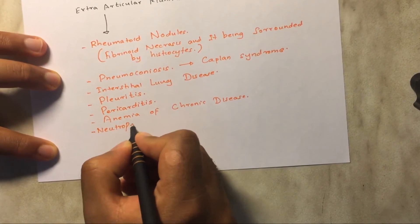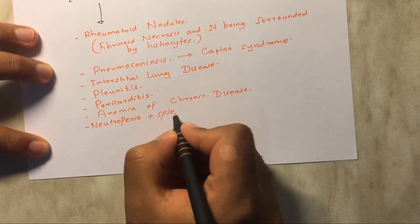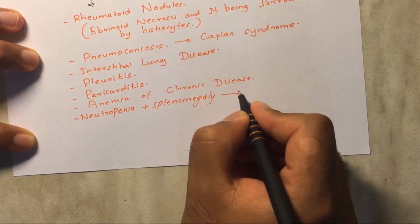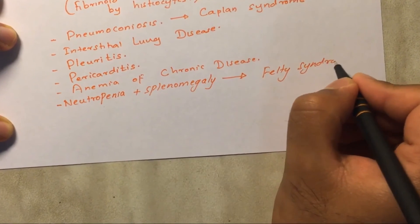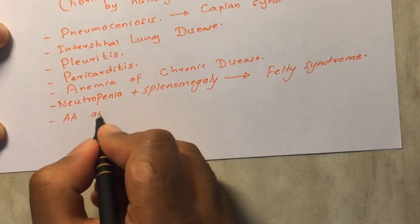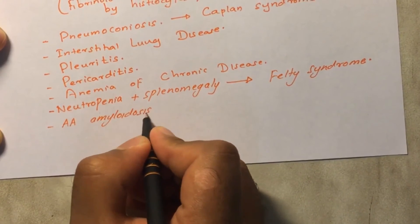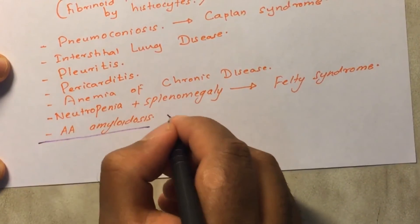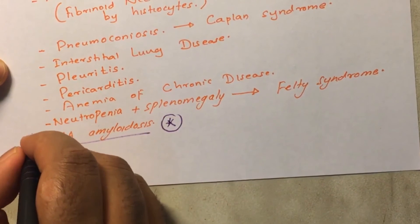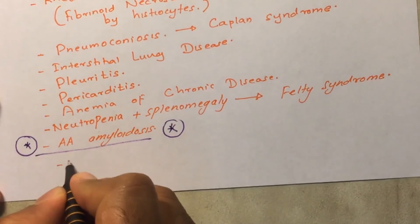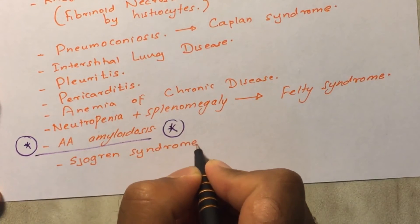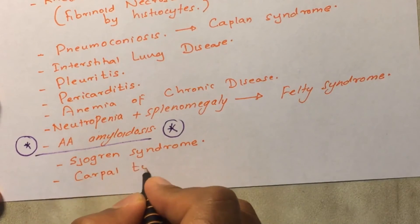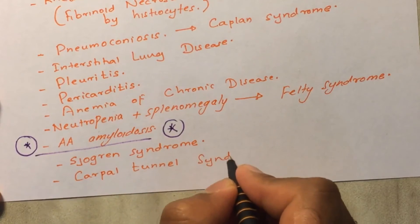A triad of rheumatoid arthritis, neutropenia, and splenomegaly constitutes Felty syndrome, which is clinically important for boards. Due to chronic inflammation, amyloidosis can develop from excess production of serum amyloid A, an acute phase reactant. There is also association with Sjögren syndrome — dry eyes and dry mouth — and carpal tunnel syndrome.